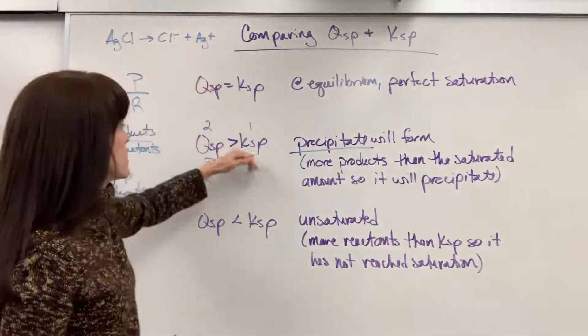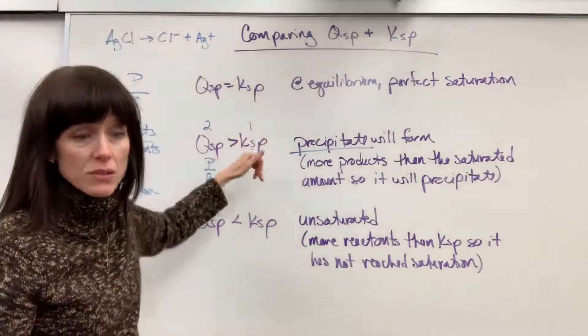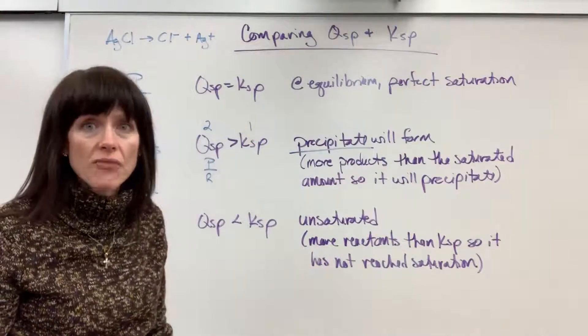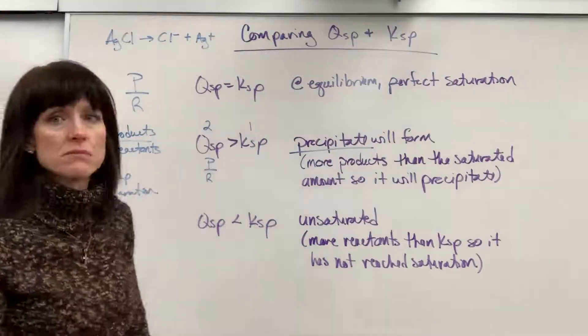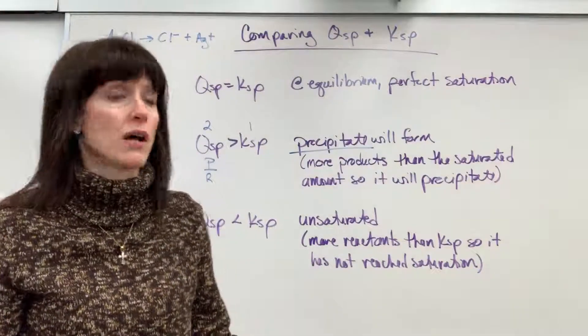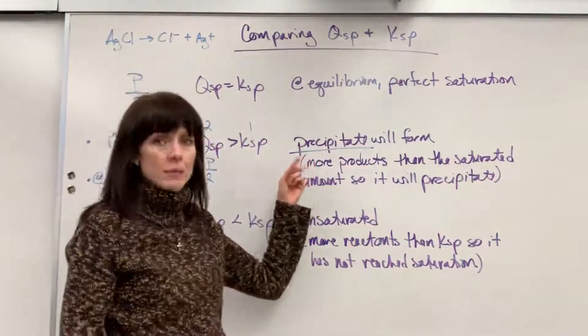And once it's hit that saturated amount, once it's hit that KSP amount, it's done. It can't dissolve anymore. And so what happens to the rest of the product? It sits there as a solid, which we call a precipitate.